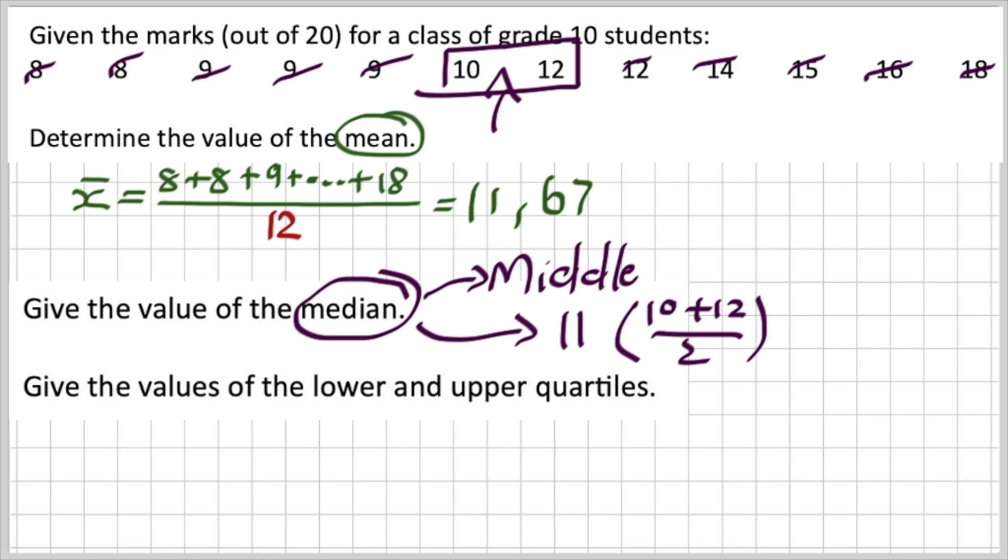Now, the value of the upper and the lower quartiles. Remember, ladies and gents, you've split your data set into two. There's the bottom half and the top half. That 11 lies in between 10 and 12. So therefore, my bottom part for the lower quartile is going to be those values.